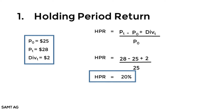Let's look at an example. A stock is valued at $25 at the beginning. Say we're calculating the return for a one-year holding period. After a year the stock is valued at $28 and pays a $2 dividend. Its holding period return will be: HPR = (28 - 25 + 2) / 25 = 20%. Holding period return is specifically useful for comparing returns of different investments held for different time periods.